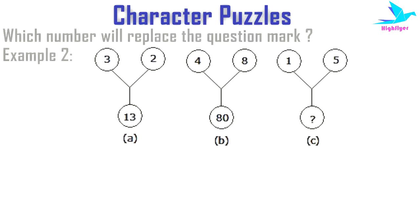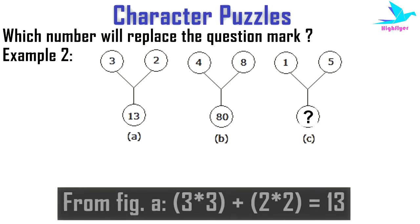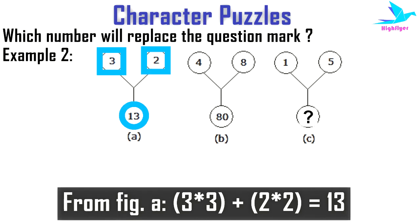In the second example, we can see three figures with a question mark in figure C. First, let's look at figure A and find out a relation between the three numbers. The relation is: 3² + 2² = 13, meaning the summation of the squares of two numbers gives the third number.